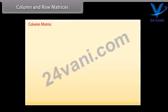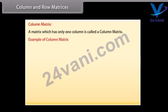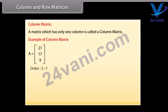Column and row matrices. Column matrix: a matrix which has only one column is called a column matrix. For example, A equals, column-wise, 21, 17, 9. This matrix has three rows but only one column, so it is a column matrix. Its order is 3 by 1.